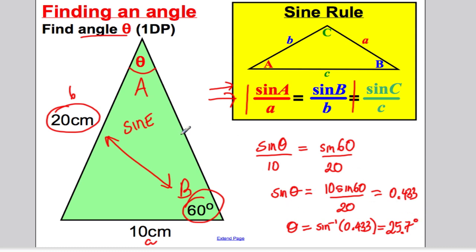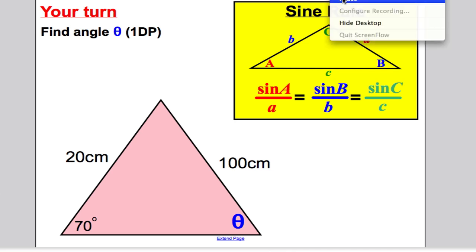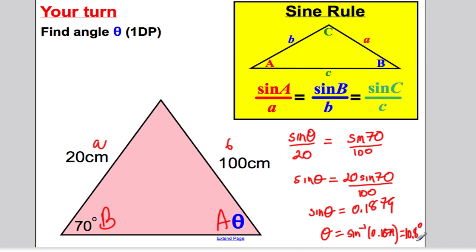Have a go at a question yourself — and the answer to that question was 10.8 degrees. That's the sine rule for working out sides and angles. Remember: use the sine rule whenever you have a non-right angle triangle and you're given an angle and the opposite side.